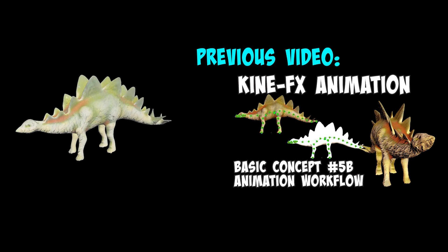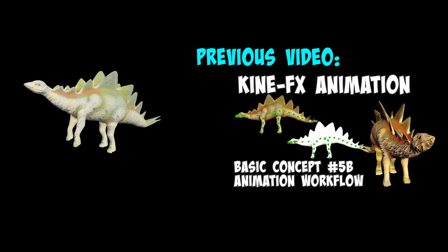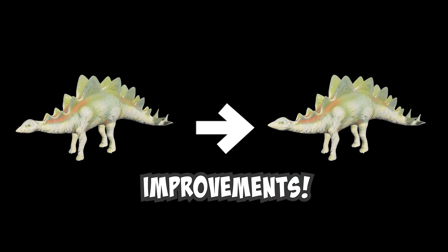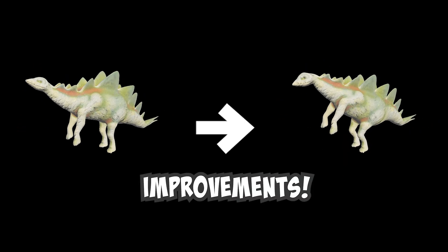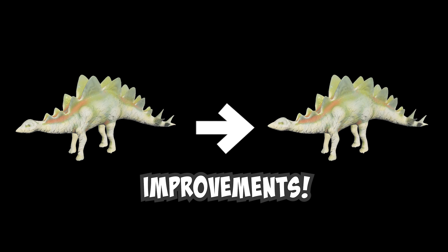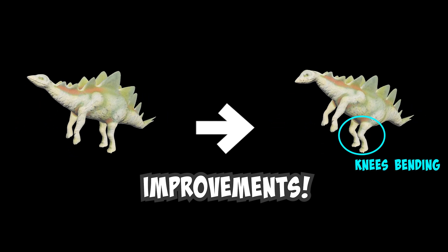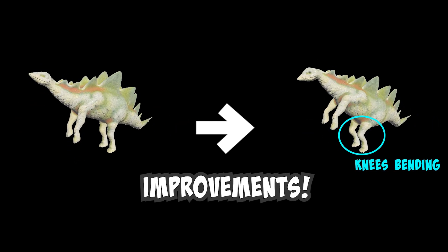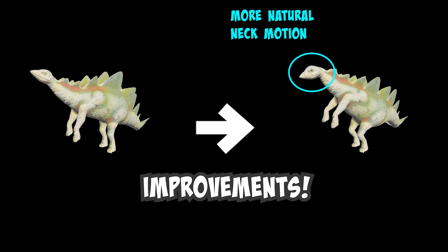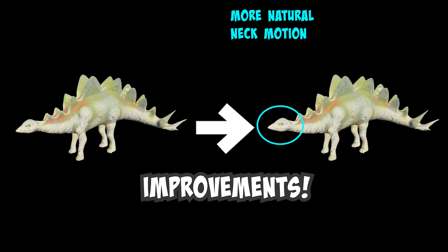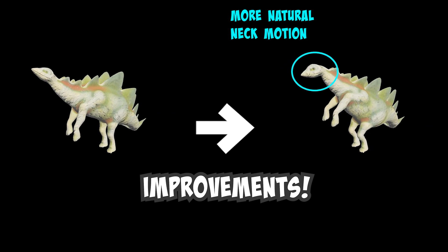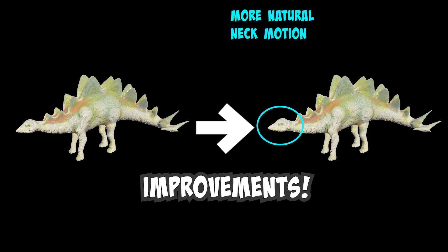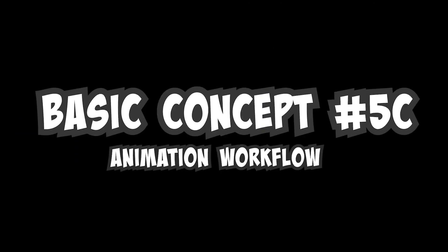Last week, we started off with a very simple tail wagging and leg stomping animation for the Stegosaurus character. And then this week, we'll take that and add some more improvements to the animation and make the motions look more natural. Basic concept number 5C: Animation Workflow.